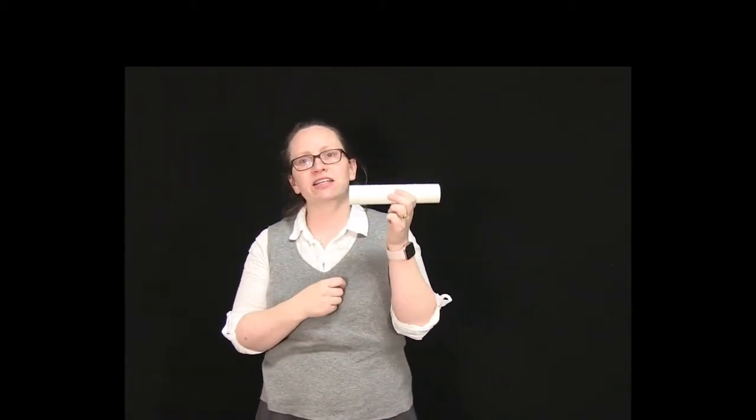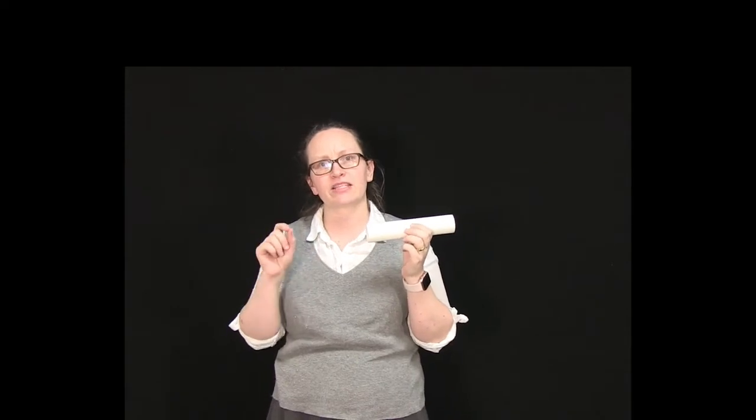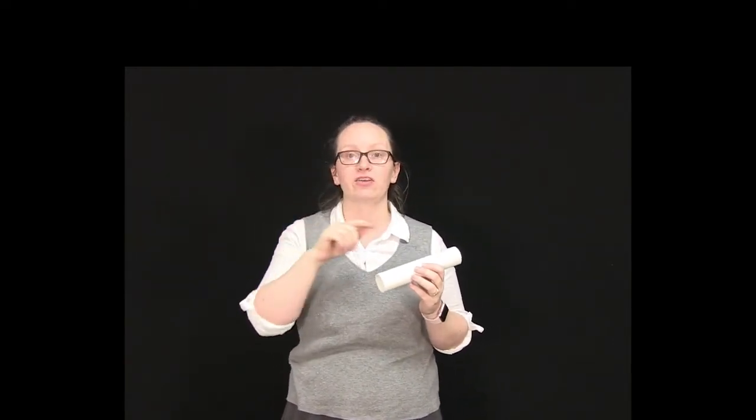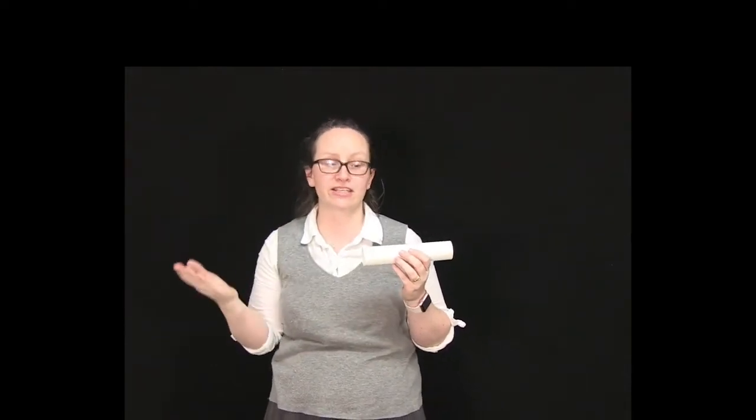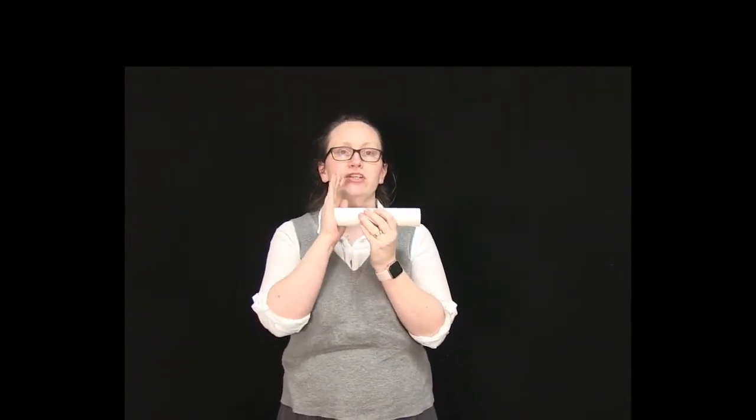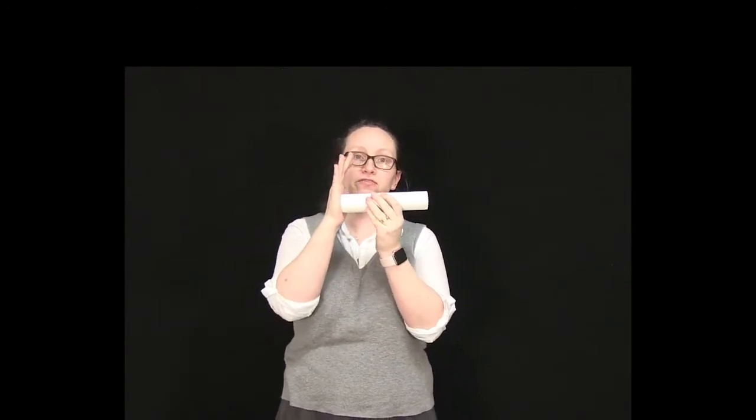Standing waves in air columns are very similar to standing waves on strings. In strings we had an input wave which was reflected from one end, and then we got interference between that input wave and the reflected wave which led to the standing wave. Exactly the same thing happens in pipes. Now this is quite obvious when we've got a closed end - we can have an input wave here and it's reflected off this closed end here and we get standing waves set up.